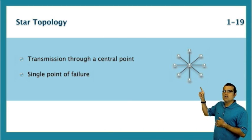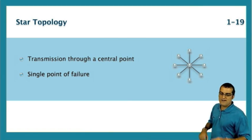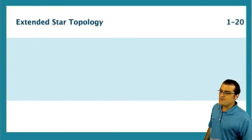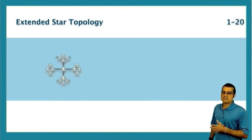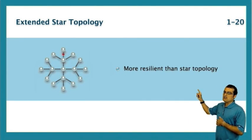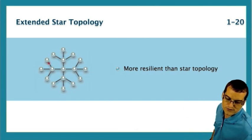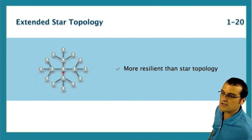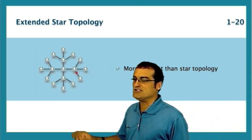How might we deal with this single point of failure? There are many different ways we're going to discuss in this course. One thing we can do is come up with this snowflake, or as it's more commonly called, an extended star topology.